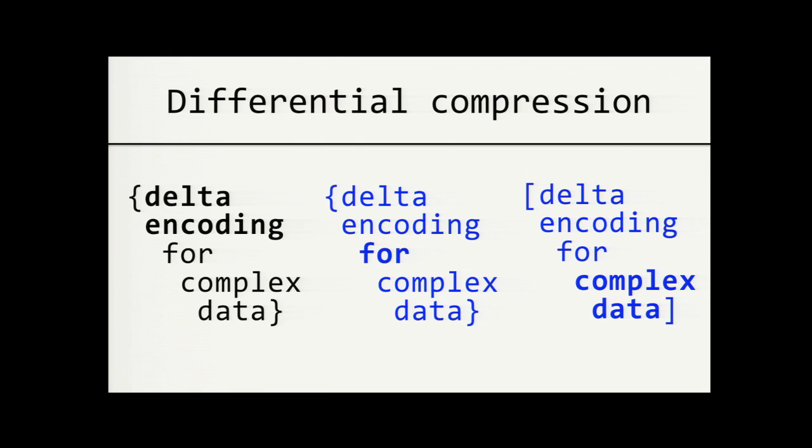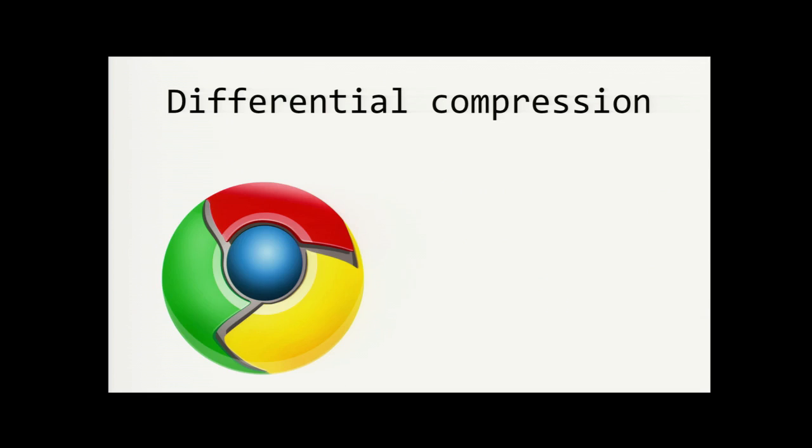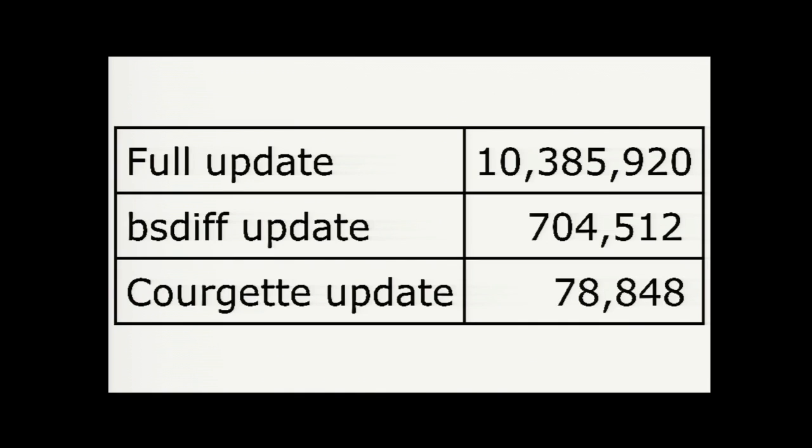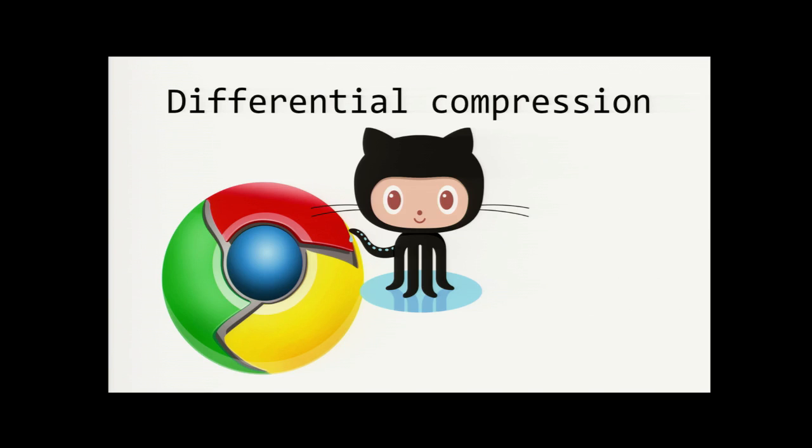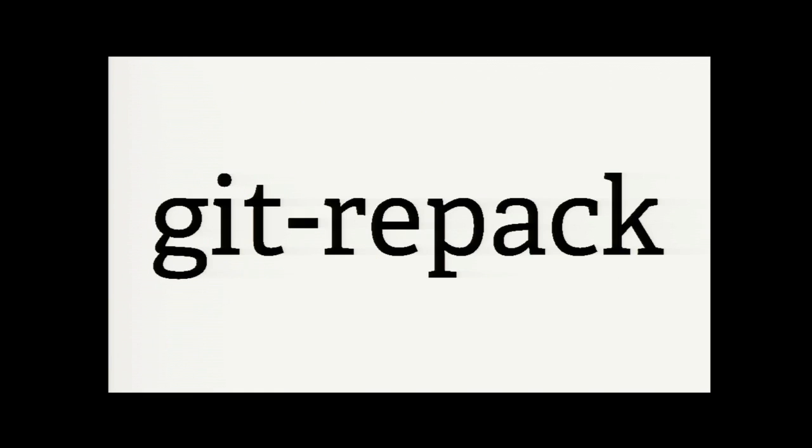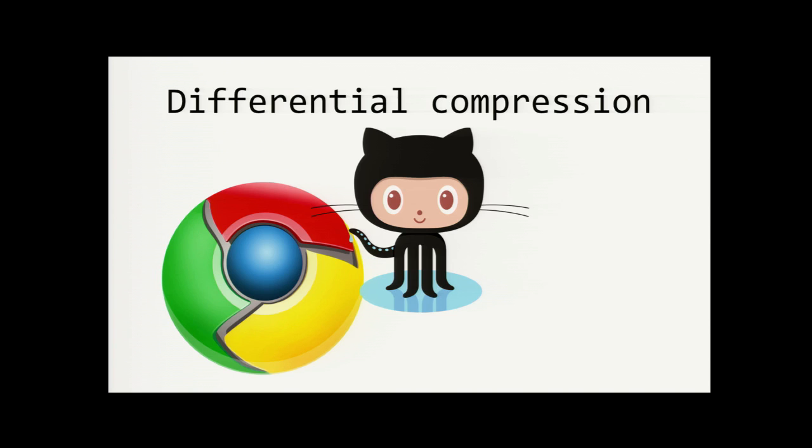Differential compression is a lot like delta encoding, but it's across multiple generations of a complex collection of data. One great example of differential compression is the Chrome auto-update system, codenamed Courgette, which only sends the difference in executable code when a new version of Chrome gets installed. And as you can see from these stats that Google published, intelligent differential compression reduced the size of a Chrome update to less than 1% of its full size, and that's really awesome.